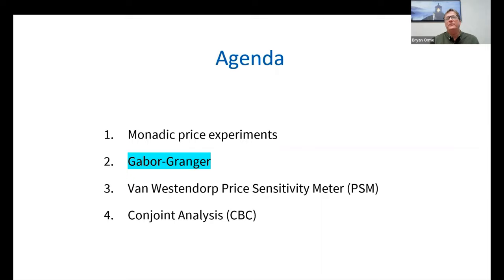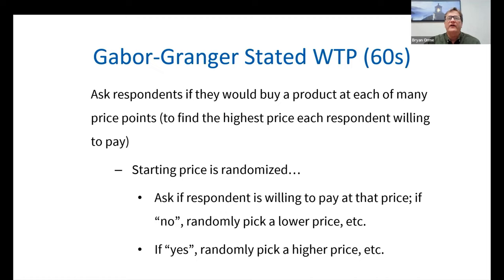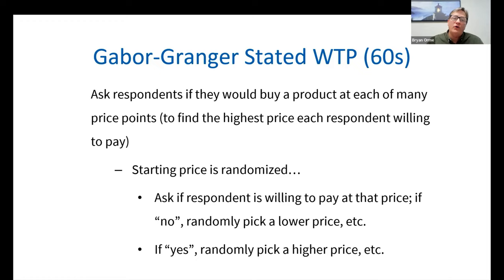Number two on our agenda: let's talk about Gabor-Granger. Regarding the Gabor-Granger technique, proposed in the 1960s, it's a survey-based questionnaire that asks respondents if they would buy a product at each of many price points to find the highest price each respondent would be willing to pay. You start with a list of prices — such as $20, $30, $40, $45, $50 — and randomize which price you ask first. You show them that random price and ask if they're willing to pay it. If they say no, you randomly pick a lower price and ask again. If they say yes, you randomly pick a higher price and ask again until you figure out which price on your list is the highest price they'd be willing to pay.